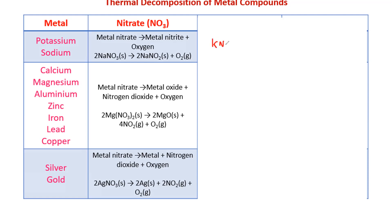For example, potassium nitrate KNO3 when heated gives KNO2 (potassium nitrite) plus O2. To balance the equation: there are 3 oxygens on the left, so we place a coefficient of 2 before KNO3 making 6 oxygens on the left, then place 2 before KNO2 and ensure O2 balances — 4 plus 2 gives 6. Nitrogen is 2 on each side, potassium is 2 on each side — the equation is balanced.